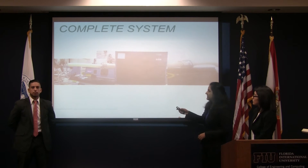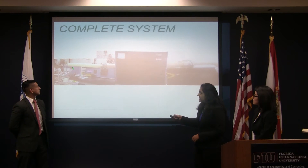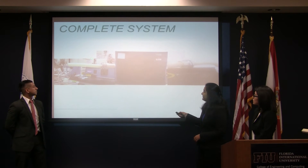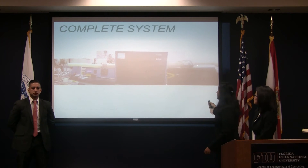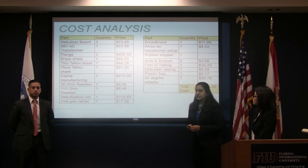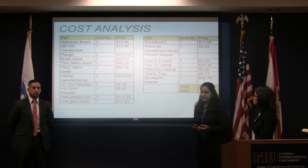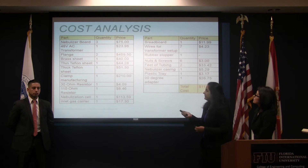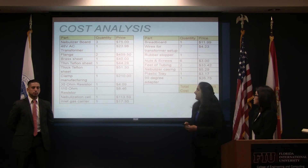Our complete system looks like this. On the left you can see the glassware connected to the furnace tube, and on the right side we collect into the collection container, connected with the tubing and the flange. Our total cost of the system was $1,135, which was under our budget of $3,000. The most expensive part was getting the flanges made for the furnace tube, which cost about $500.